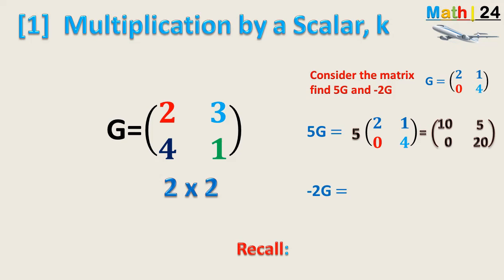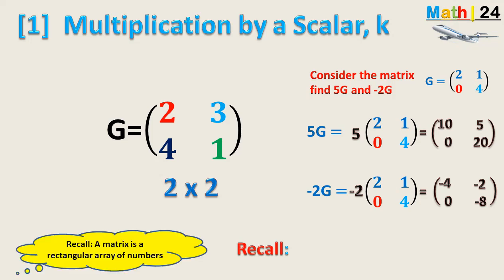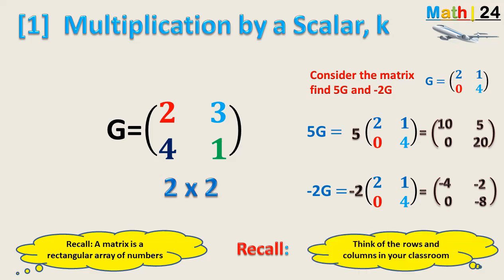For the second example, multiplying this same matrix by the scalar minus 2, we will have minus 2G equal to minus 2 times matrix G. So: minus 2 times 2 is minus 4, minus 2 times 4 is minus 8, minus 2 times 0 is 0, and minus 2 times 1 is minus 2. So the matrix minus 2G is: minus 4, minus 2, 0, minus 8.